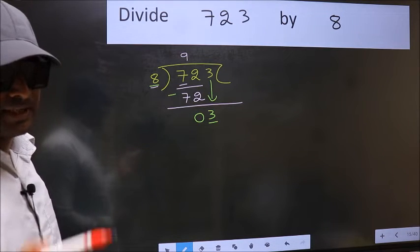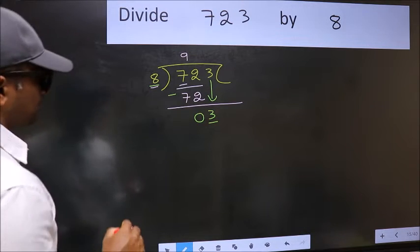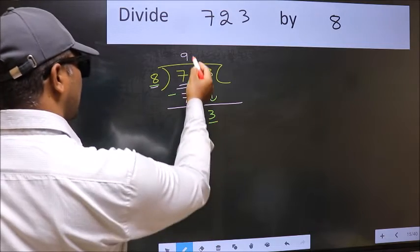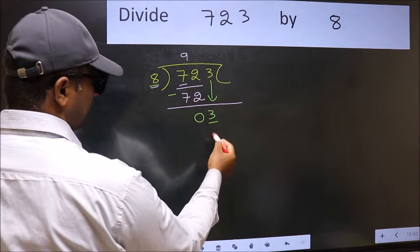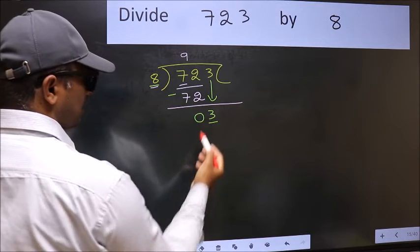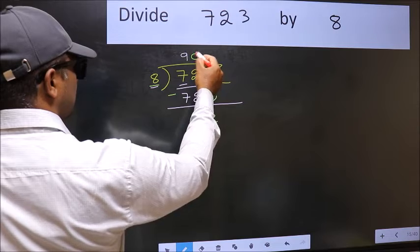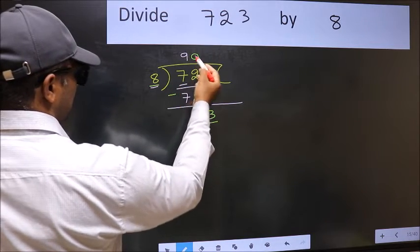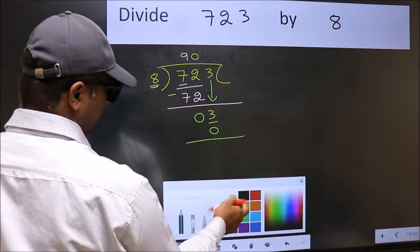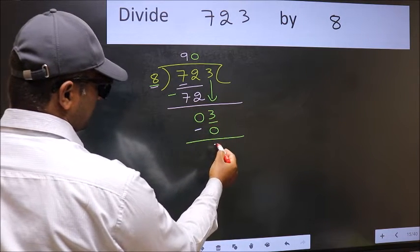Bring 3. Instead, what you should think of doing is: which number should we take here? If I take 1, we will get 8. But 8 is larger than 3. So, what we should do is take 0. So, 8 into 0 is 0. Now we should subtract. 3 minus 0 is 3.